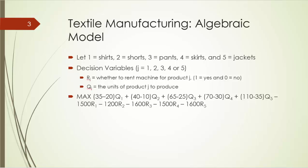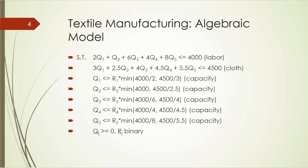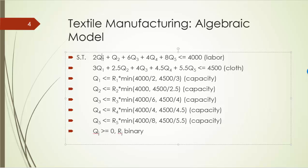Next, let's look at the constraints. The first two constraints are the labor and cloth constraints. The amount of labor used, written as 2q1 plus q2 plus all the way to 8 times q5, must be less than or equal to the labor hour availability of 4,000 hours. Similarly, the amount of cloth used, which is 3q1 plus all the way to 5.5 times q5, must be no more than 4,500 square yards.